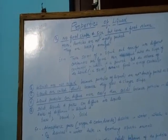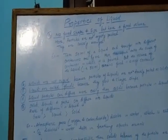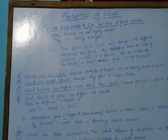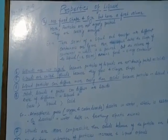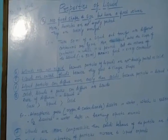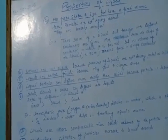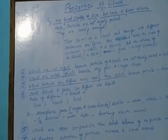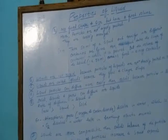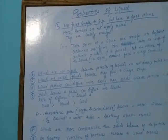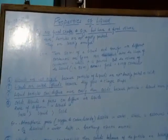We can be more clear by taking one example. If we take 50 ml of a liquid and transfer it into different containers one by one, we observe that the liquid takes the shape of the container in which it is kept or poured, but the volume of liquid — that is 50 ml — remains fixed in every container. Liquids are not rigid as solids because the particles of liquid are not densely packed.